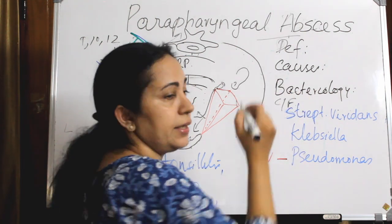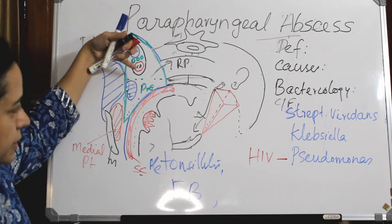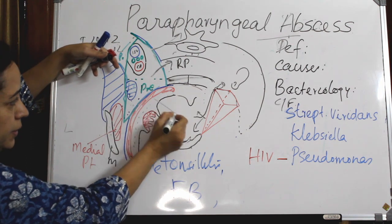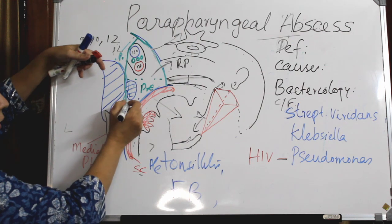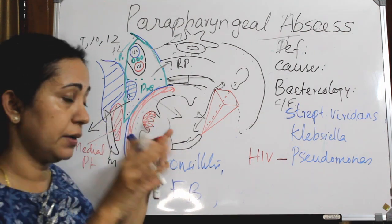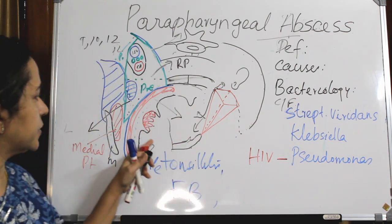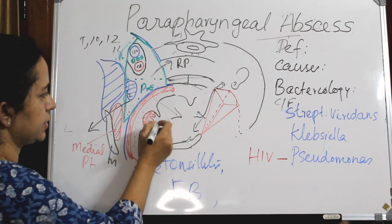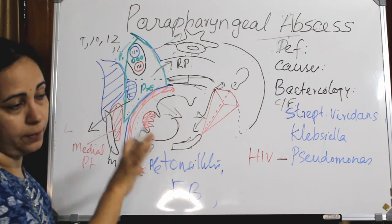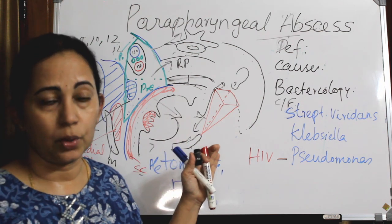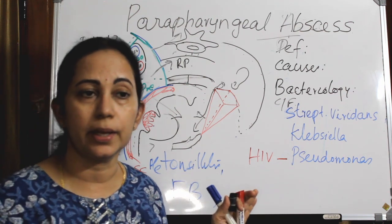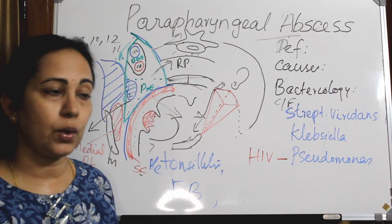Regarding clinical features, the abscess collecting in the parapharyngeal space can bulge medially or laterally. If it bulges medially, it pushes the tonsil, causing medial bulge or medial displacement of the tonsil. The clinical features are therefore almost similar to a peritonsillar abscess or quinsy.